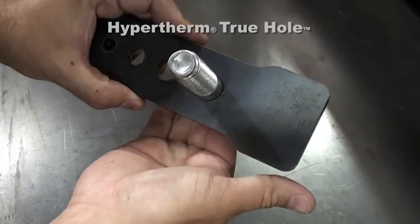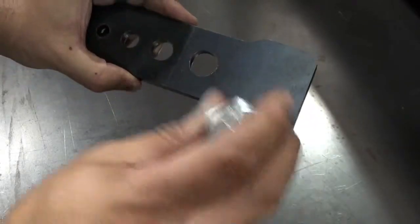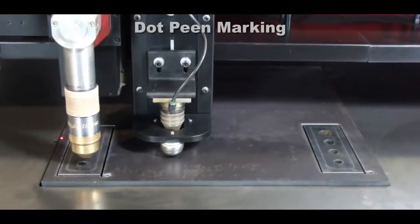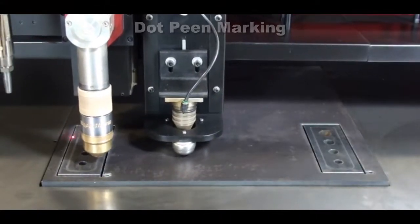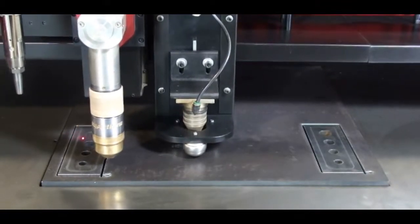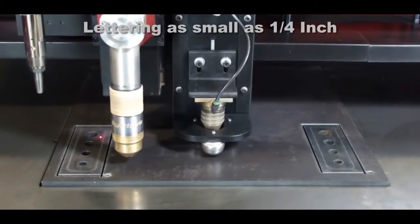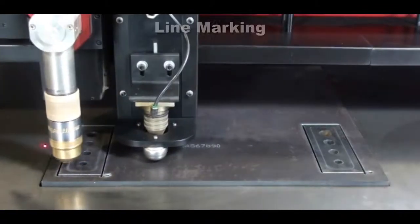Precision plasma cutting that optimizes cut quality is now possible. Marking options such as plasma and dot-peen marking are available. Dot-peen marking allows the CNC cutting machine to lay out lines, drill locations, and lettering and numbering can be as small as one-quarter inch high. It's fast and reliable.